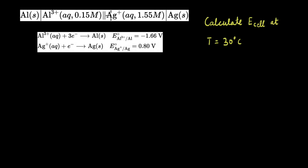We have this question where a galvanic cell is given, these half reactions are given, and their corresponding standard reduction potentials are given. The question is to calculate the E cell at a temperature of 30 degree Celsius. You can pause the video here and give it a try before we continue.